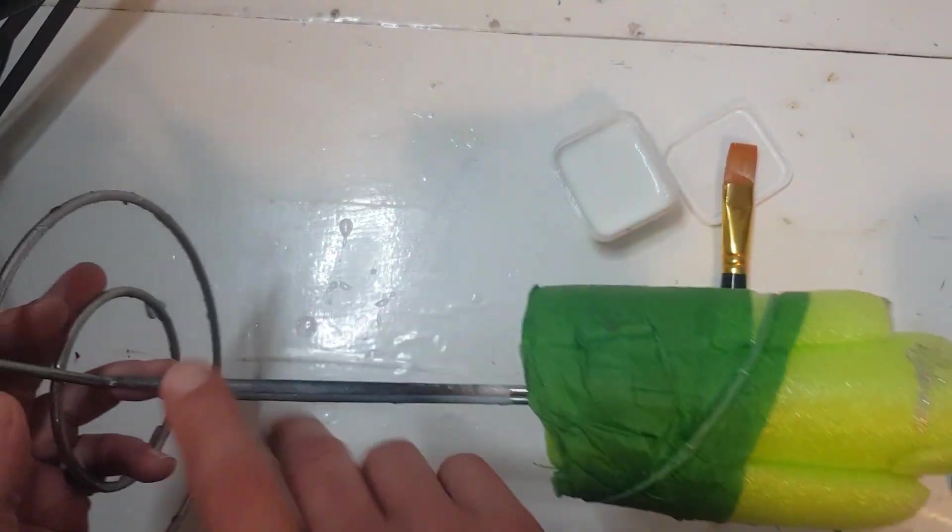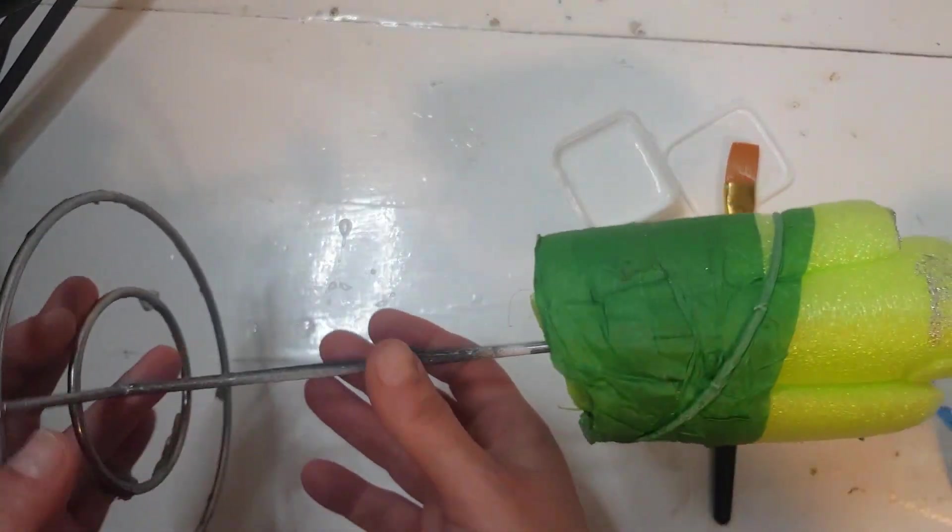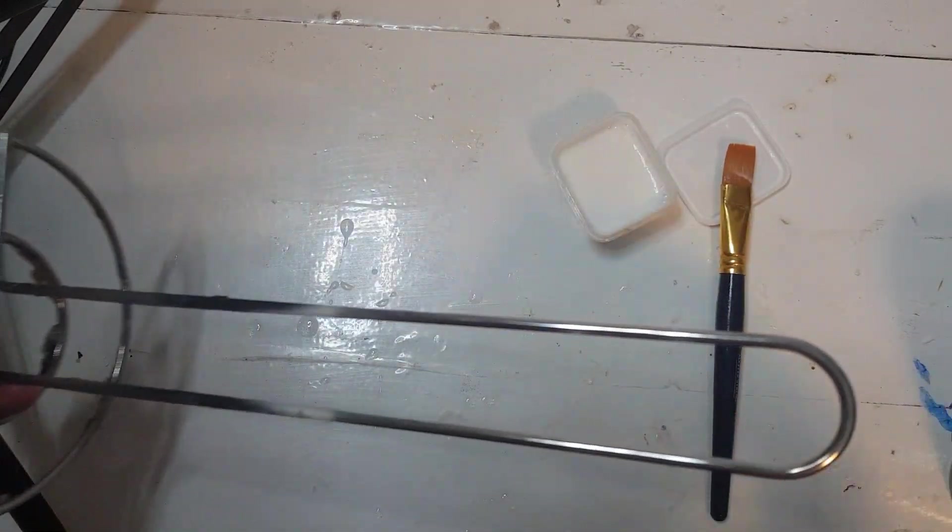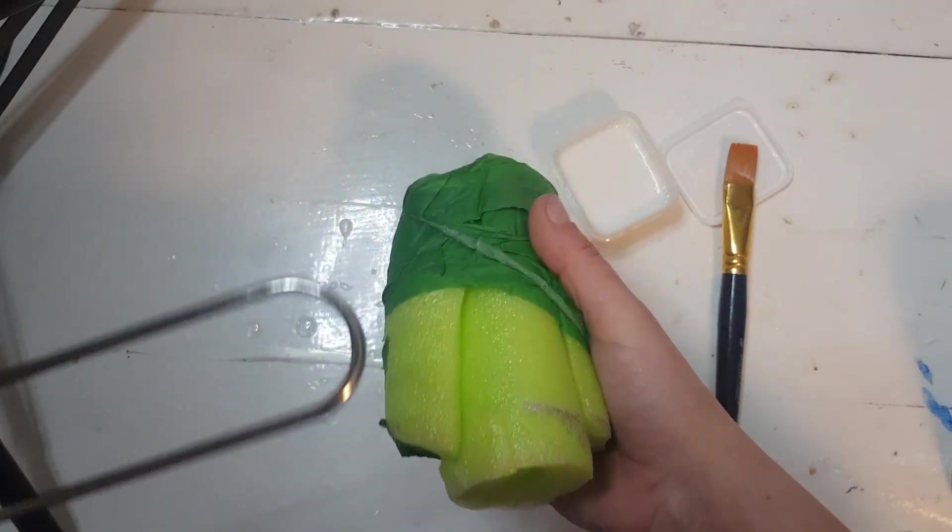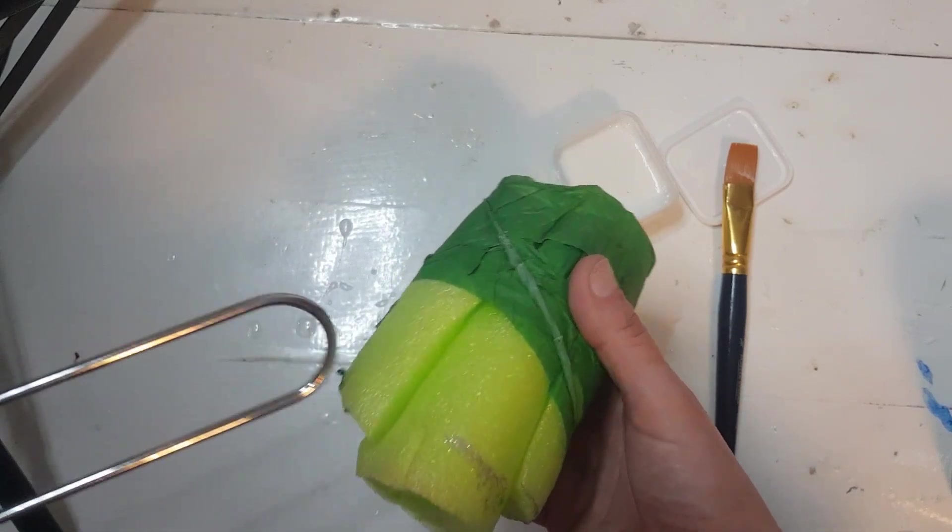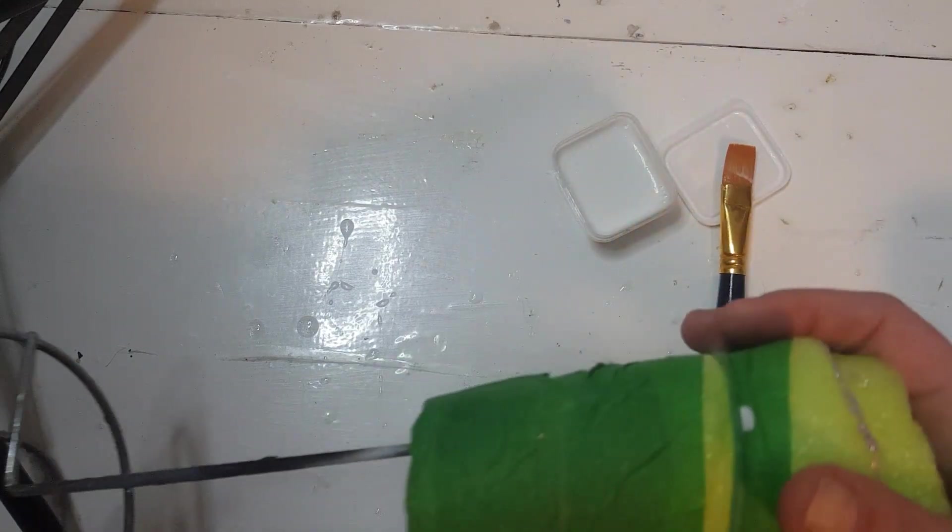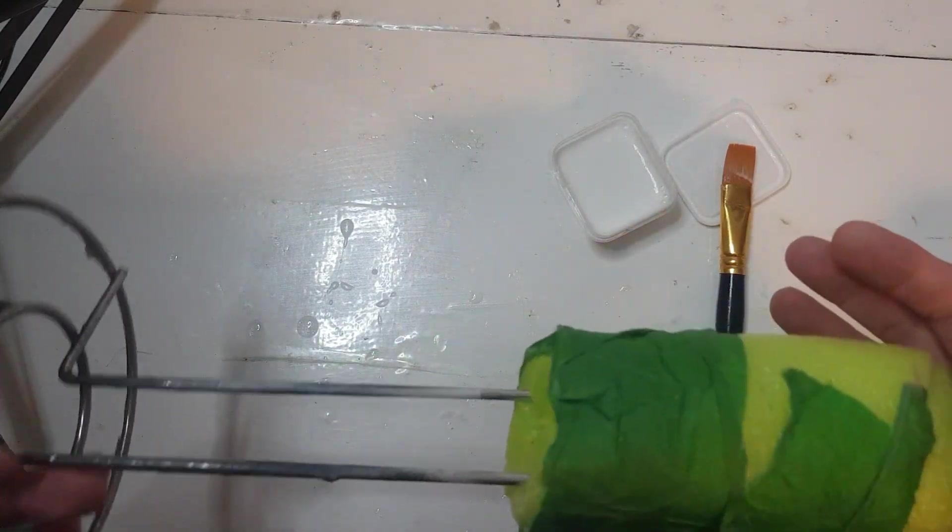This is just a Dollar Tree paper towel holder. You would stick the roll of paper towels over it. This is just a small pool noodle with a half a chunk tape around it. And you just stuff a cup on there and it'll hold it and you can spin it.